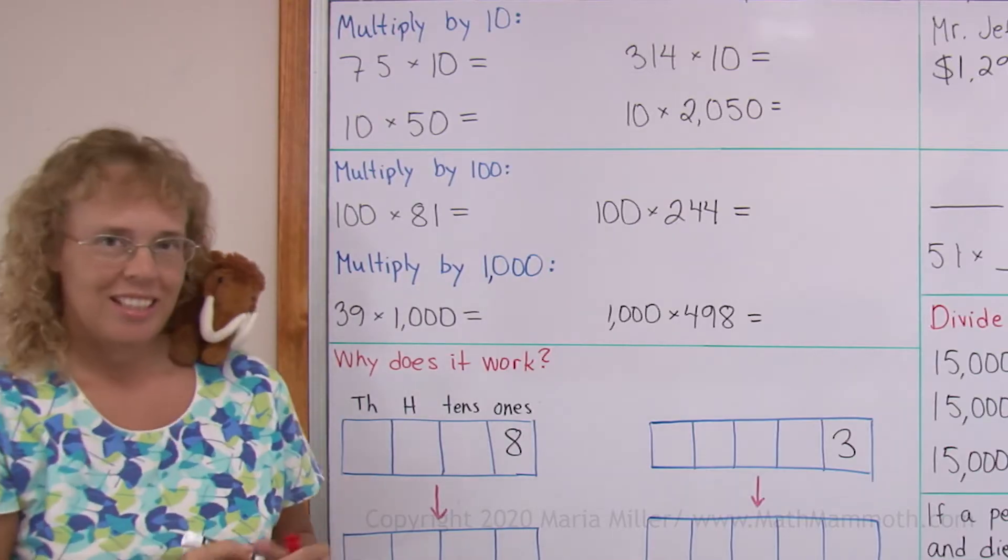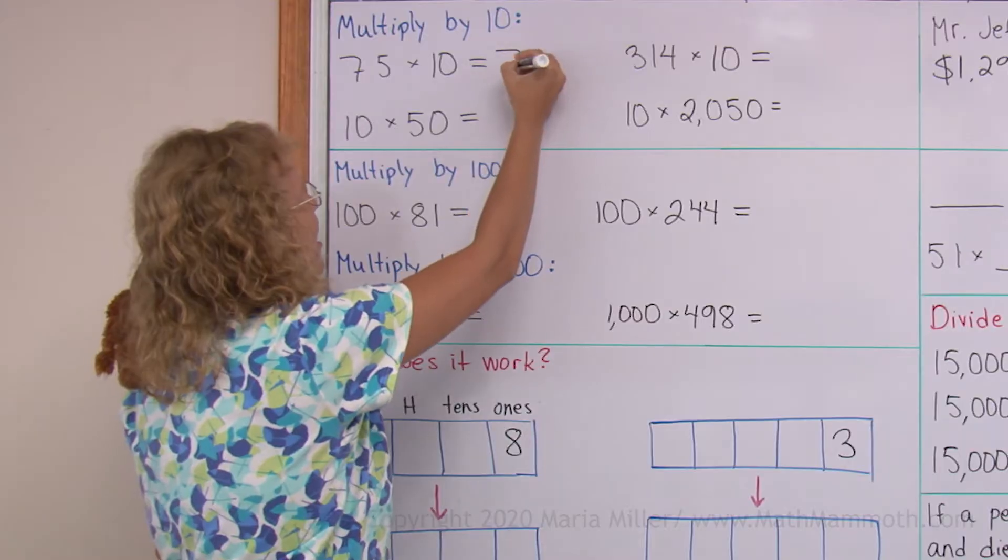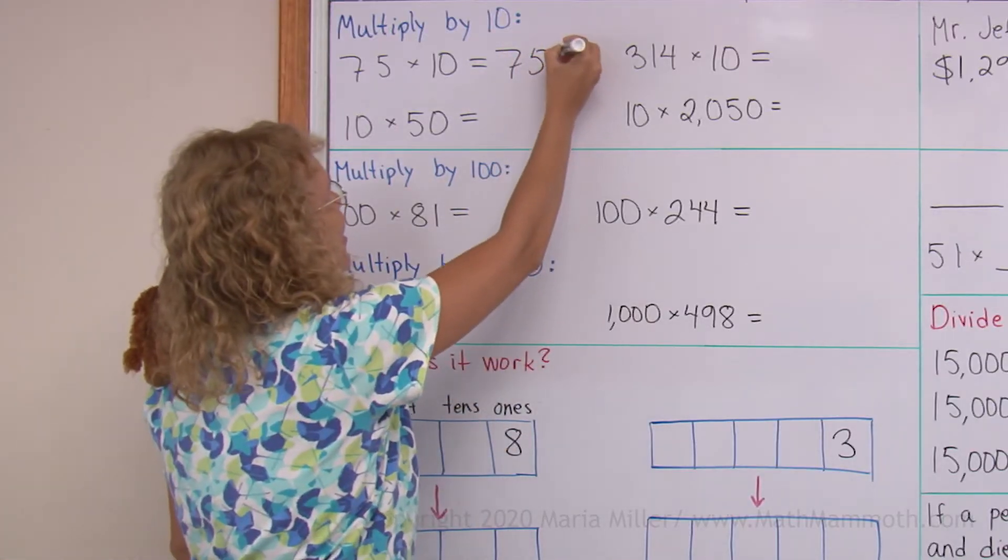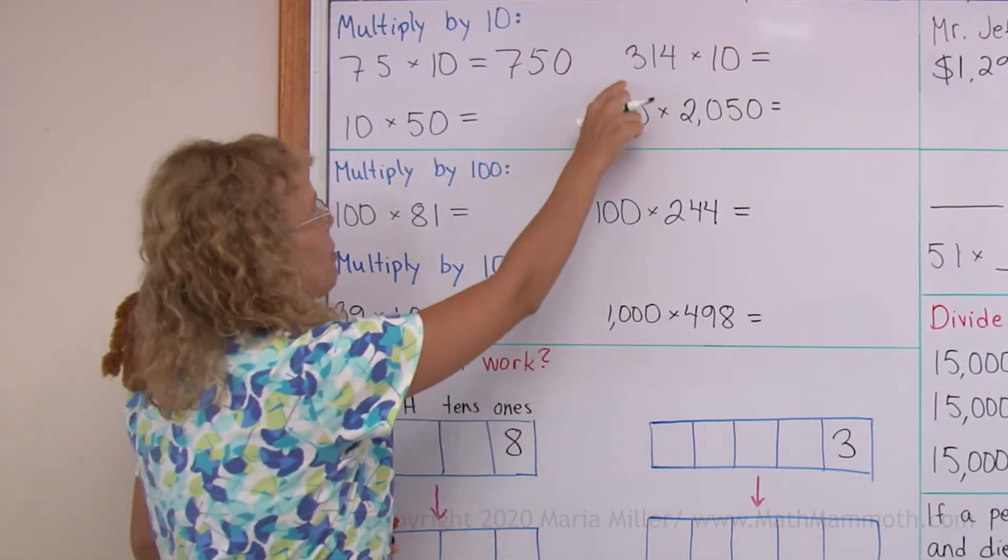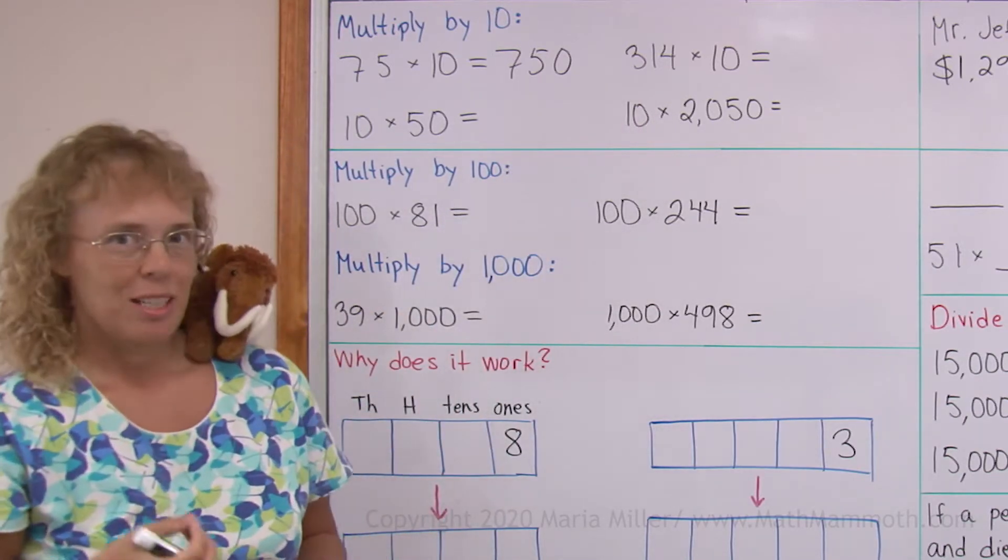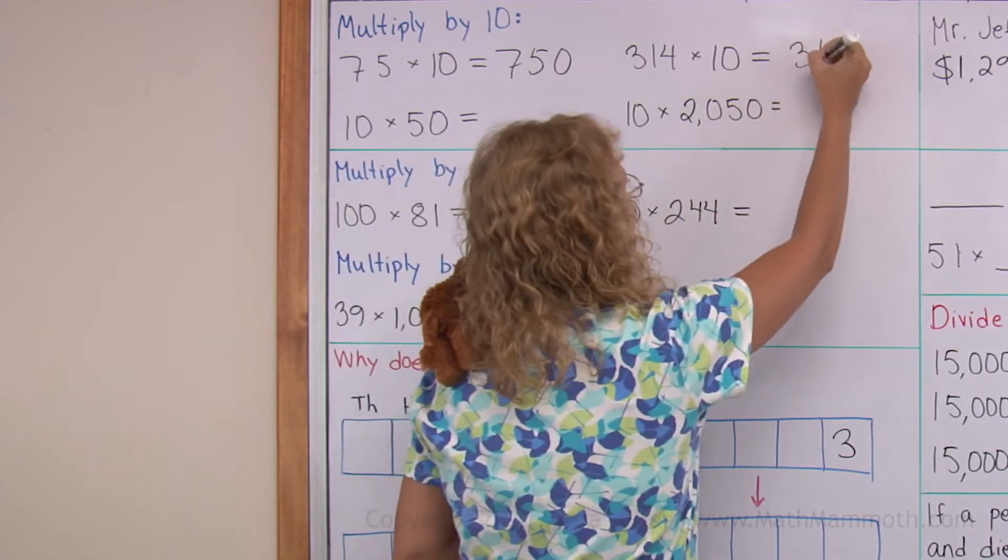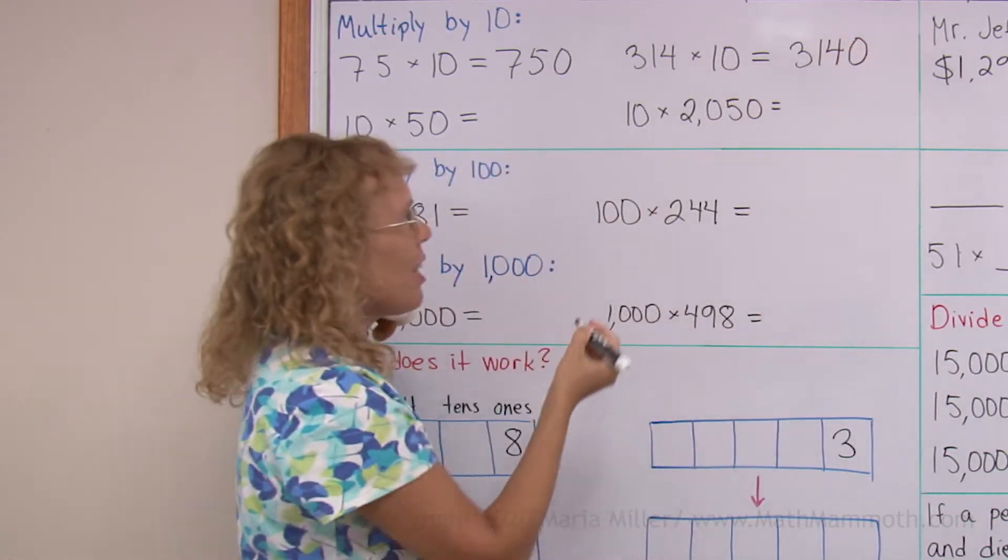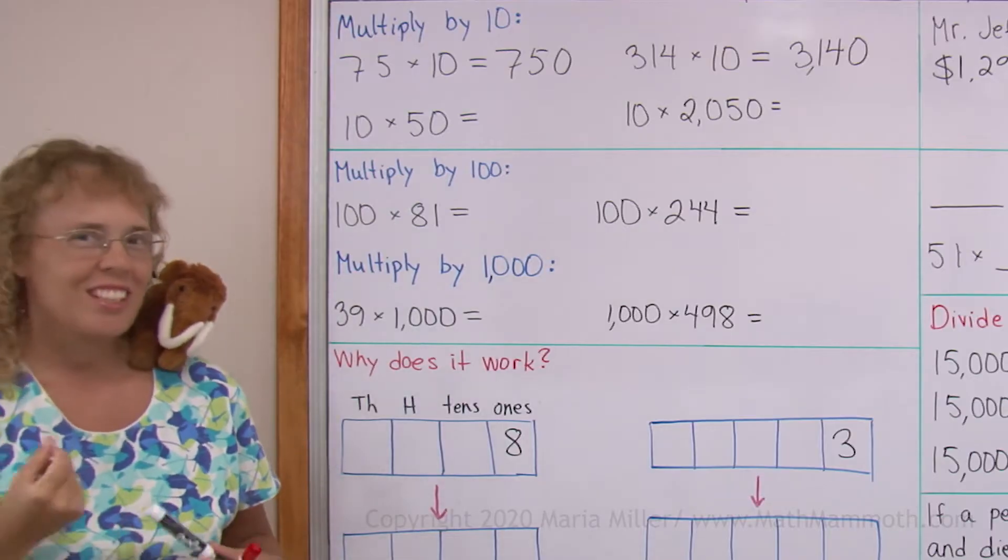75 times 10. All you need to do is just take that number 75 and write it here. And then tag a zero after it, like that. So it is 750. Let me try this one, 314 times 10. So I write the number 314. And then I write a zero after it, so it becomes 3,140. Okay, it's a really easy shortcut.